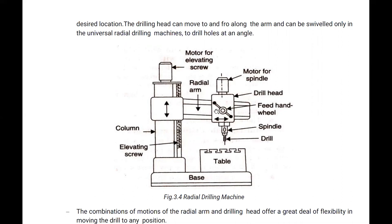The complete radial arm can be slid, swung, or moved up and down as required. The parts include a motor, spindle drill head, feed hand wheel, spindle drill column, and an elevating screw. The whole portion can be held and moved to the required position at a desired location.